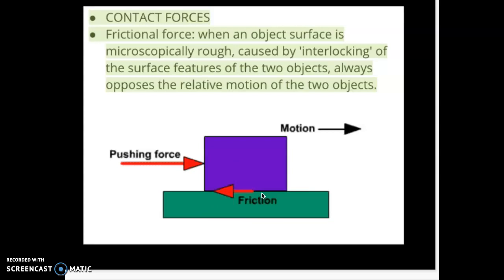There's actually two types of frictional force, static and dynamic. And we'll look at those in the next lesson. But basically friction is always opposite to the way that the object is moving or the way that it's about to move.